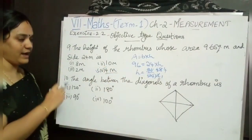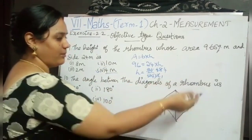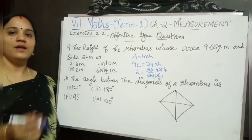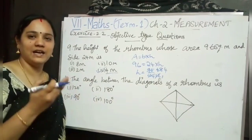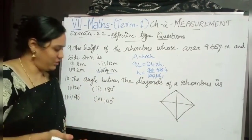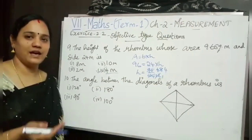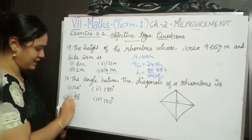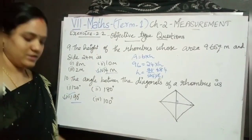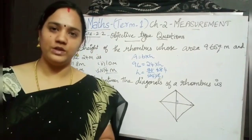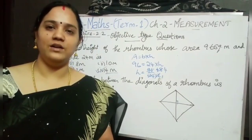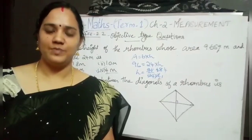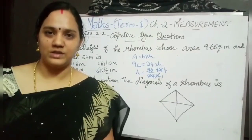Now the last one: the angle between the diagonals of a rhombus. Already while explaining the properties of the rhombus I told you the diagonals bisect each other at right angle. Right angle means 90 degree, so my answer is 90 degree. So our exercise 2.2 is over. Please go through all the problems and do it in your notebook, and just practice it — then only you can clearly understand the concept.